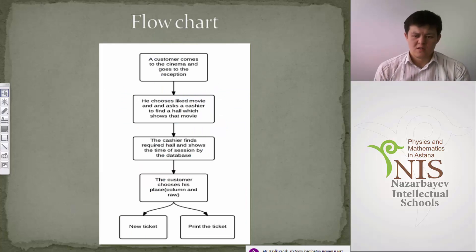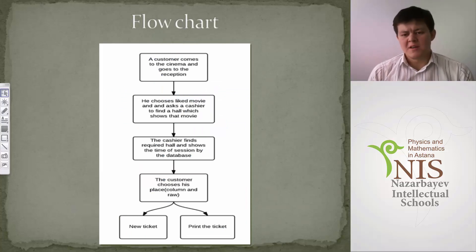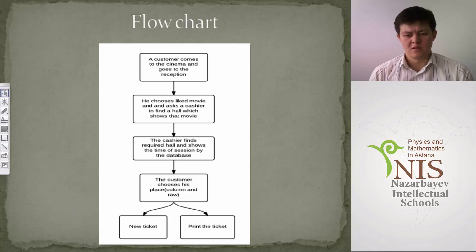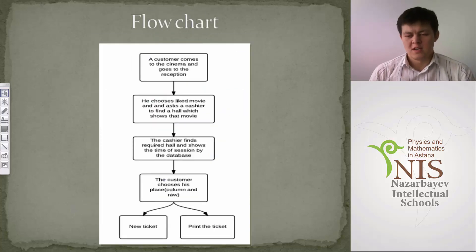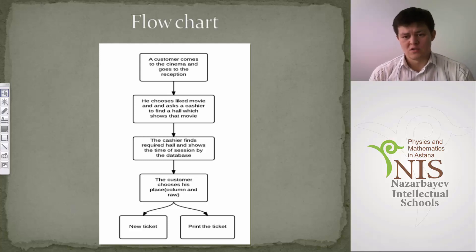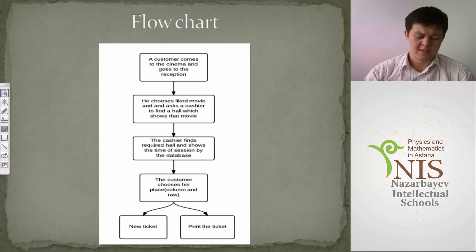The second flowchart is about a cinema system where the client can choose a new ticket, a specific movie, or a seat in the cinema. These two flowchart examples were chosen from student works from the previous year and were part of their investigation, created after interviews with the clients.